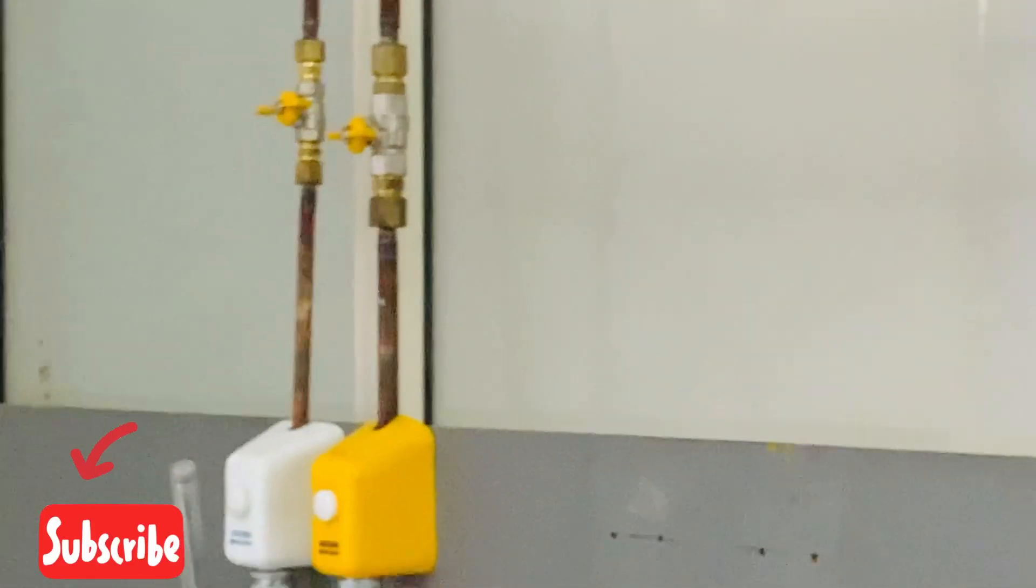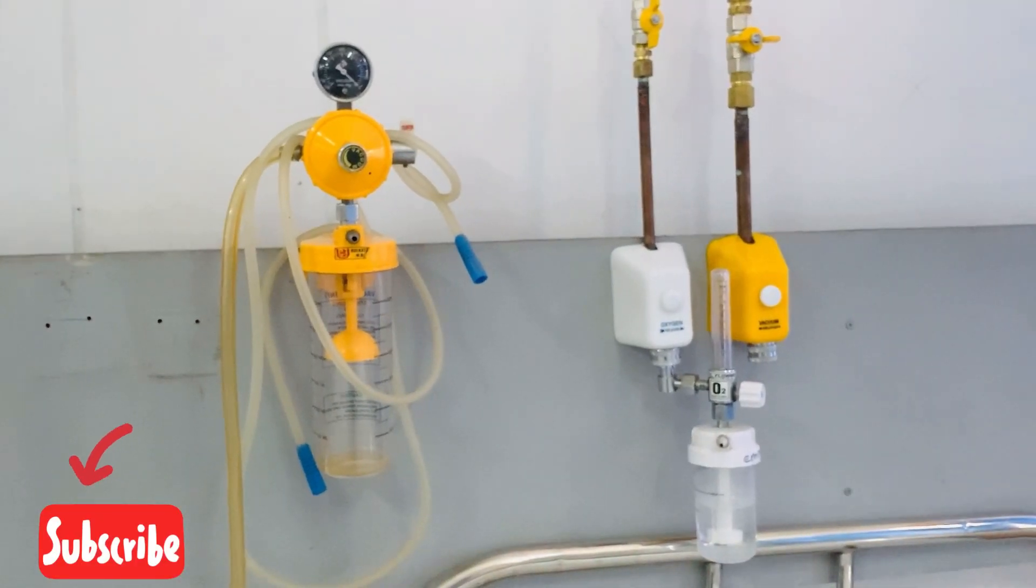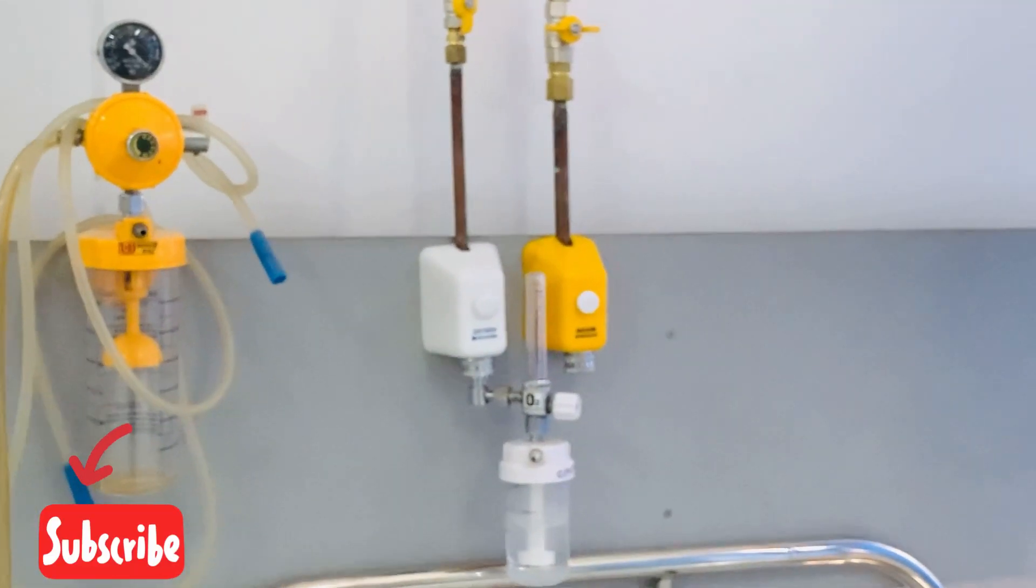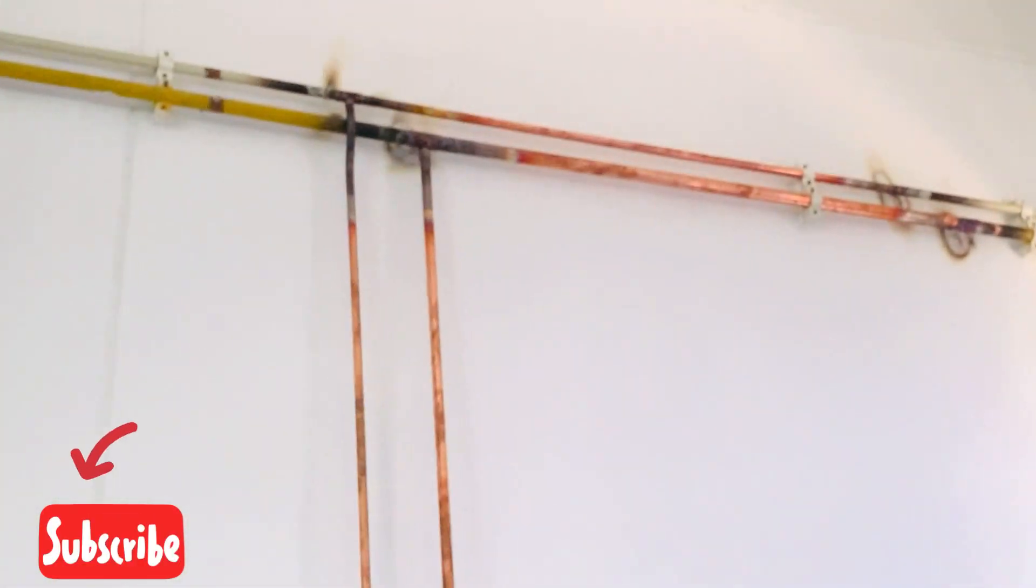Plastic tubing also expands and contracts up to 10 times more than copper when exposed to intense heat, making it less likely that the system can be put back into service.